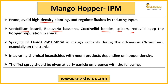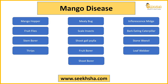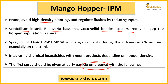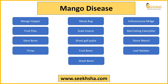Pehla spray jo chemical insecticides ka hona chahiye, woh jab pehla panicle emergence ho raha hai na, uske time par hona chahiye. Toh mango hopper ke andar yeh ho gaya — yeh wala pest wala point bahut important hai, isko zaroor yaad rakhiyega. Mango hopper ke baad jo next pest aata hai woh hai aapka mealy bug.